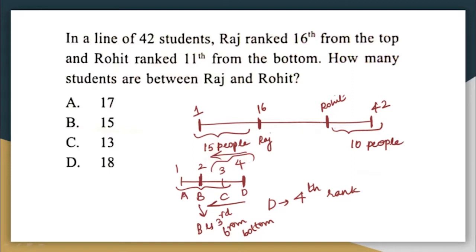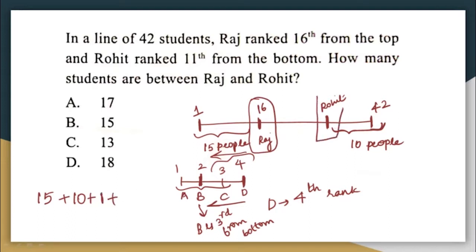Similarly, when I say that Rohit is 11th from the bottom, that means there are 10 people who have rank after Rohit. So before Raj there are 15 people who have ranks, and after Rohit there are 10 people who have ranks. And there is Raj himself who has the 16th rank, and there is Rohit himself who is 11th from the bottom. How many people have been counted now? 15 plus 10 is 25, plus 1 is 26, plus 1 is 27. We have taken 27 people into consideration.